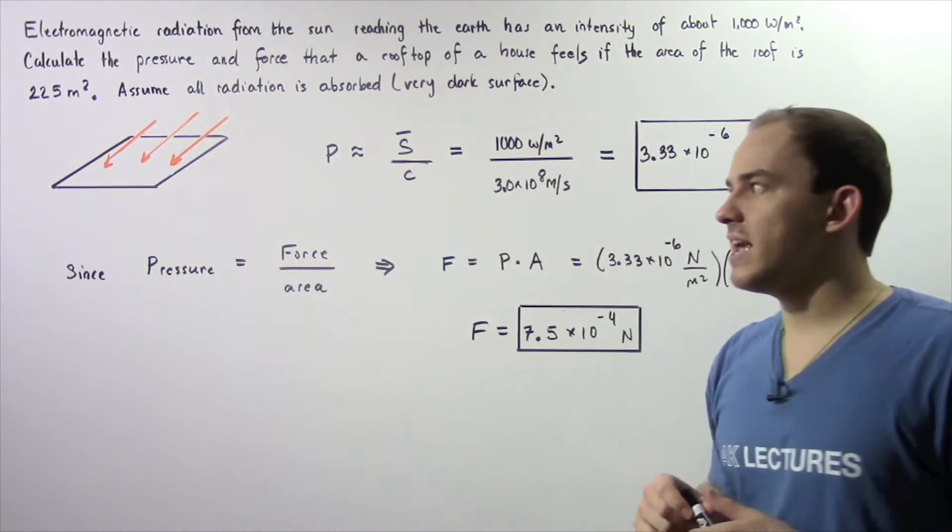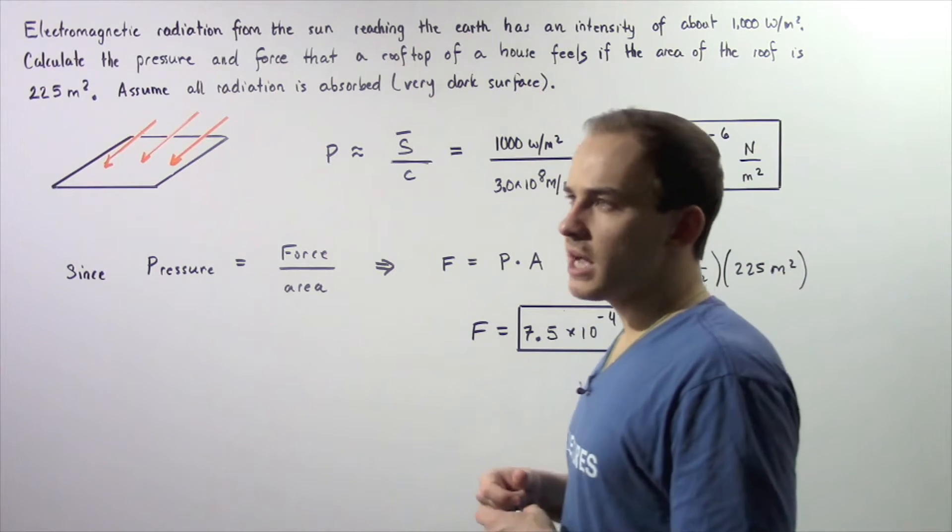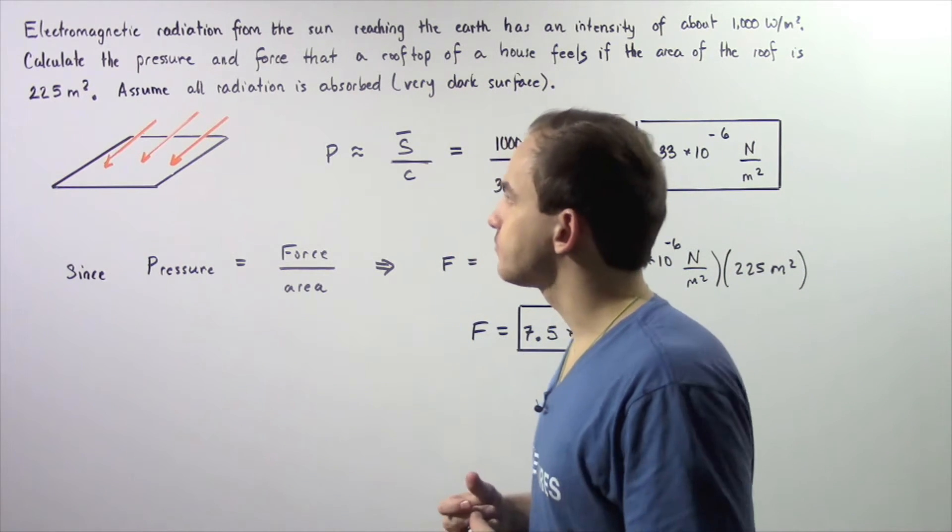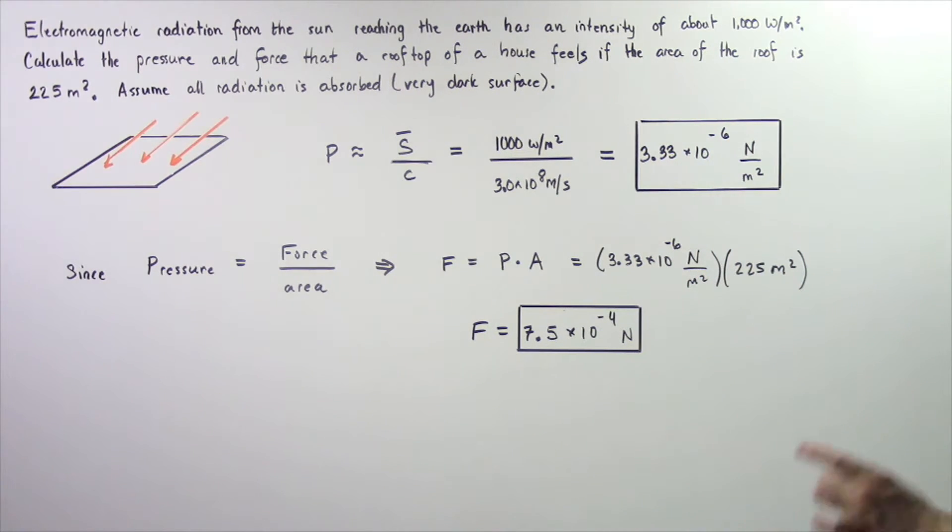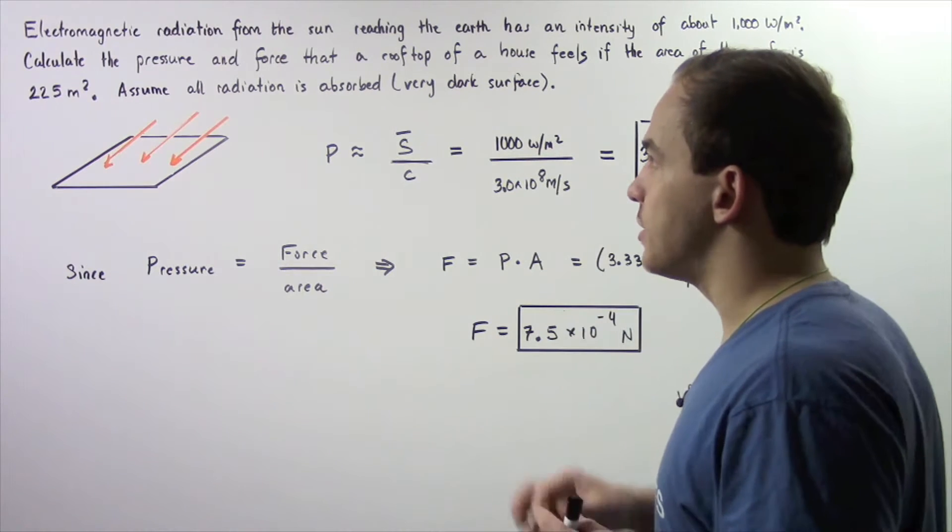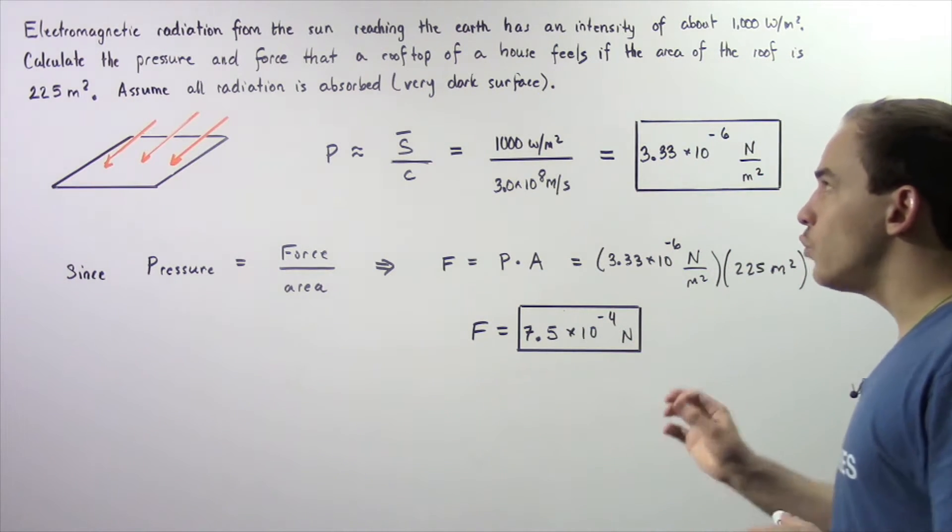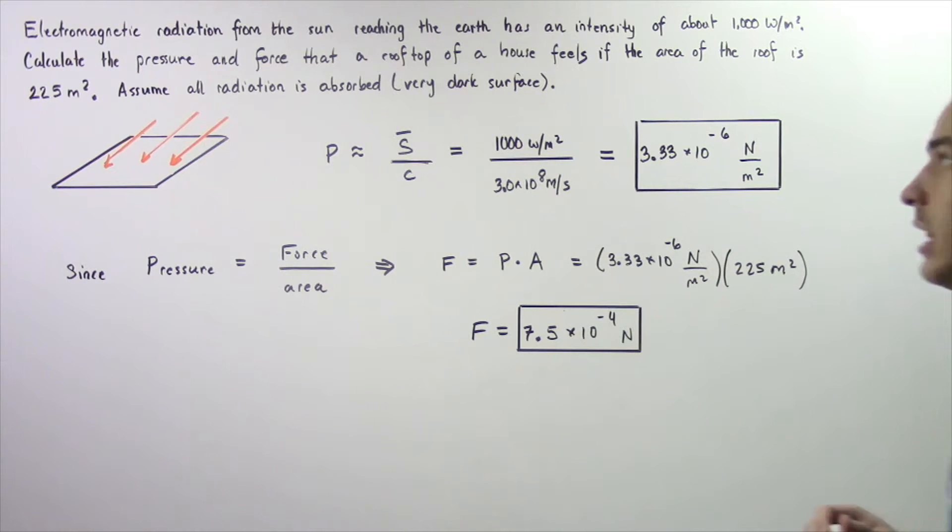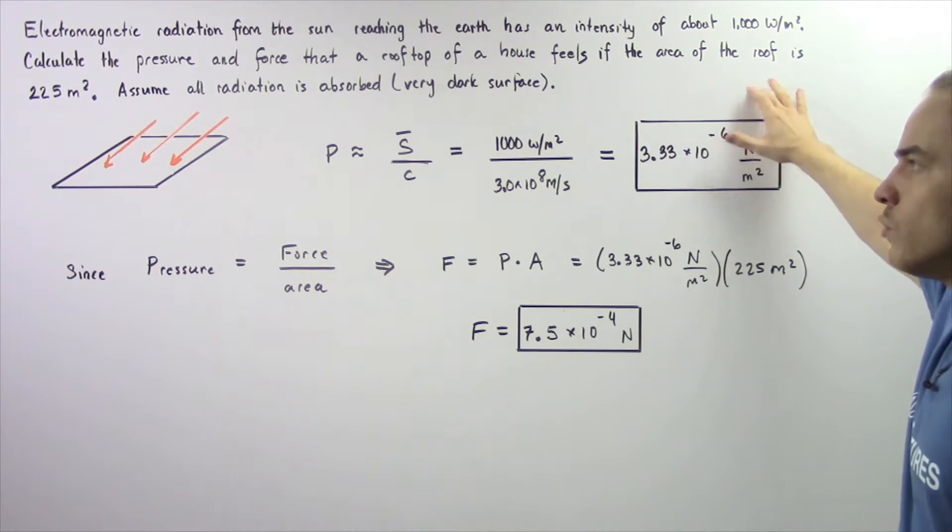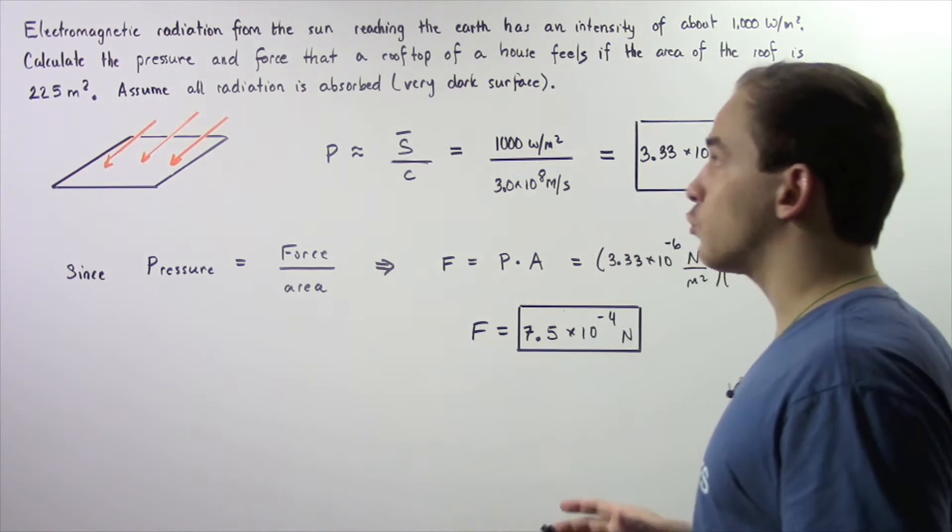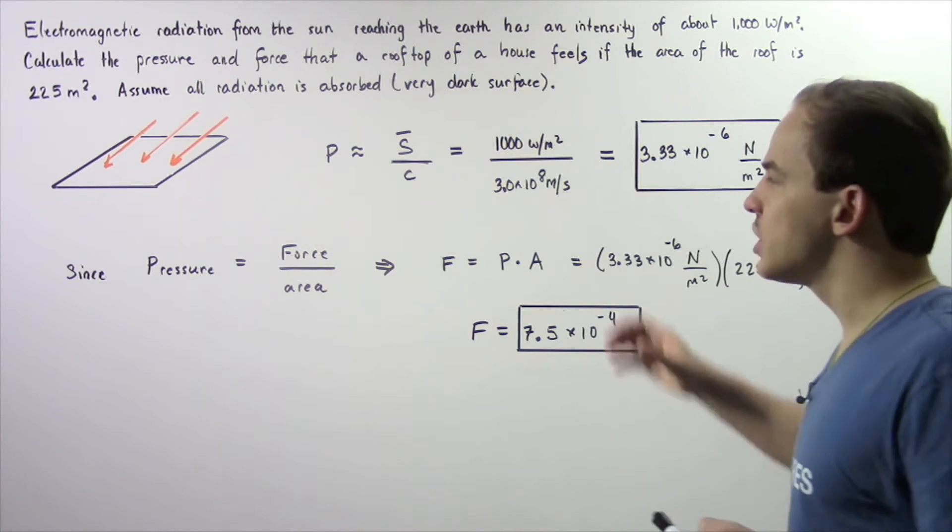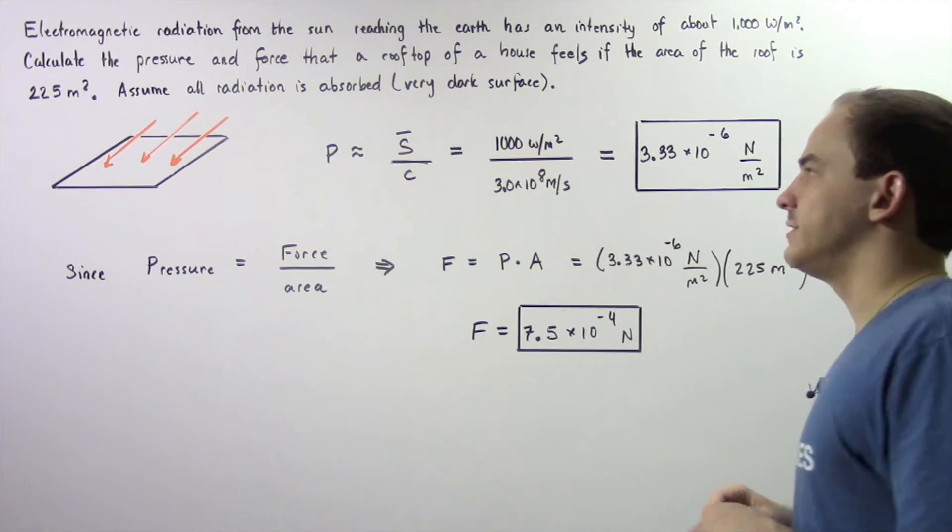Let's look at an example applying this concept. Electromagnetic radiation from the sun reaching the earth has an intensity of about 1000 watts per meter squared. Calculate the pressure and force that a rooftop feels as a result of this electromagnetic radiation if the area of the roof is 225 meters squared. Assume all the radiation is absorbed by the rooftop because it is very dark.